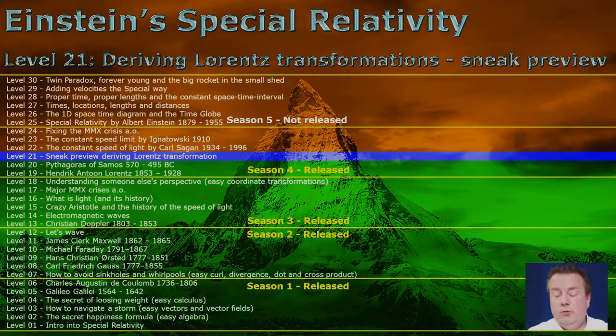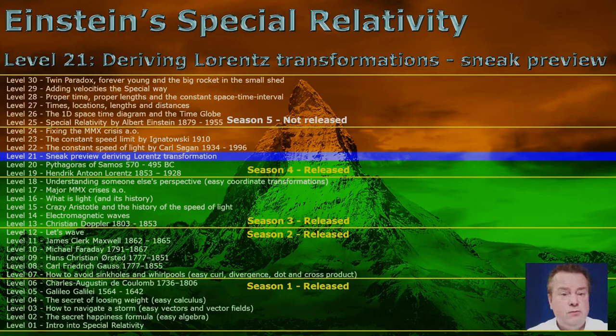So it's optional — you can say 'I believe it, I don't want a sneak preview of the Lorentz transformation, I'm going to level 22.' That's fine. But if you are a daredevil, you can derive a significant piece of the Lorentz transformation just by using the knowledge of the previous level and applying the theorem of Pythagoras.